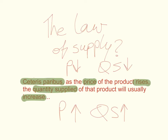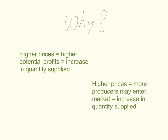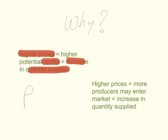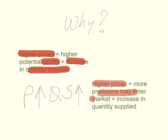Remember, the assumption of ceteris paribus is very important. So why is the law of supply as such? Higher prices usually mean that producers can earn a higher profit — higher potential profits. This would encourage current producers in the market to increase the quantity supplied. At the same time, higher prices will encourage more producers to enter the market, which will also lead to an increase in quantity supplied.